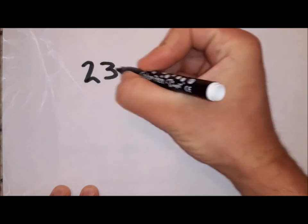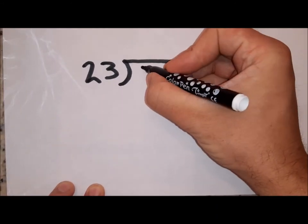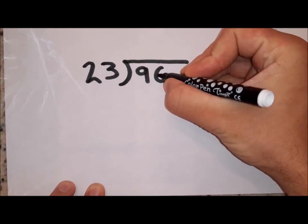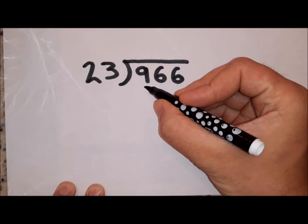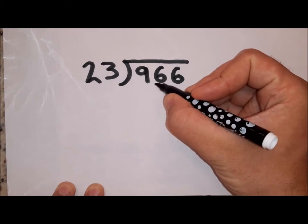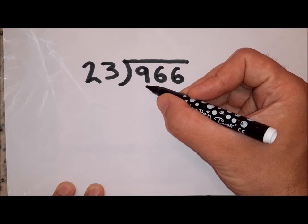First we write out the number that we want to divide, similar to bus stop. So we are going to do for our problem 966 divided by 23. And the first question I have to ask is what is 96 divided by 23? I count up in 23's.